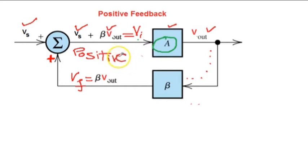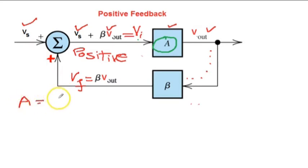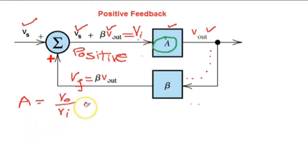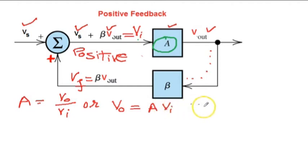We are writing the expressions. The gain of the amplifier is A, which is output voltage upon the input voltage. The input to the amplifier is Vi — remember, the amplifier gain is output upon the input to the amplifier. So V0 becomes A times Vi. Substituting the value of Vi, we know Vi equals VS plus beta times Vout.